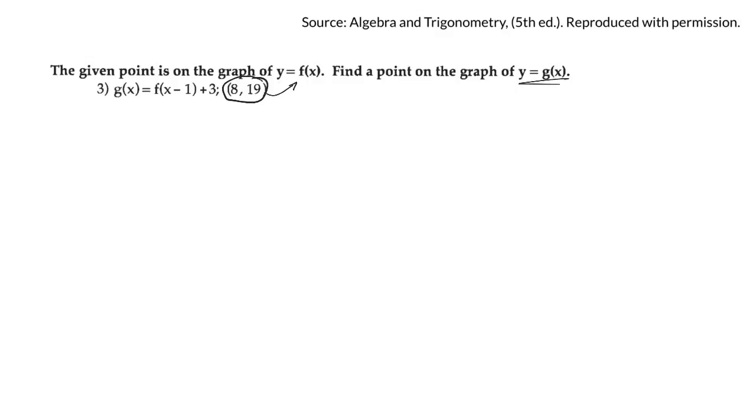I don't know what it is, but that point (8, 19) might be up there somewhere. They say they're transforming f of x according to this, so g of x is the same thing as f of x, except for... what does that do? So on a graph, that will move things right 1, and this will move things up 3.